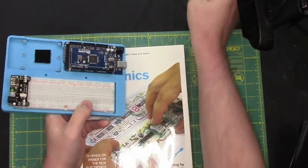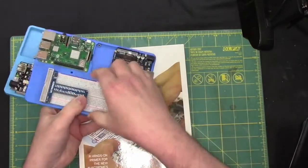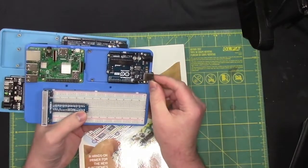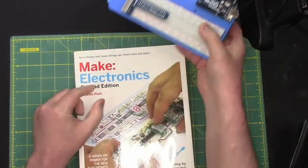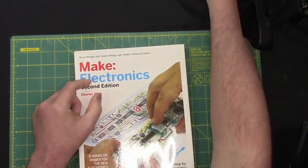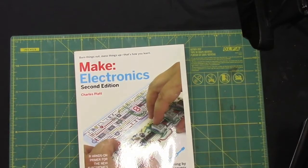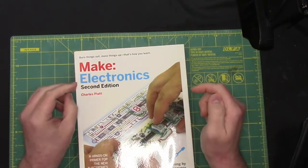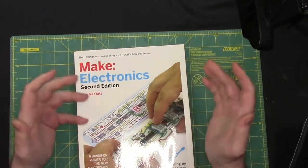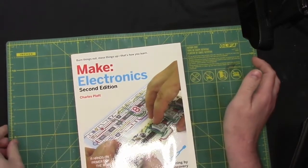This is a Mega, and then I have some regular Unos here, and also some tiny Nanos that can be fit into a scale model to run LED lights, sound, and different types of automation. Say you have a tank and want to put a servo on the turret to make it move side to side—these are all things you can do, and I'm going to teach you how.